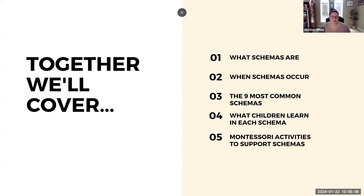During our time together today, we're going to start by talking about what schemas are and when they happen. We'll then take a look at the nine most common schemas in early childhood and some activities — specifically Montessori activities — that can be implemented to align with those schemas. Then I'll share some resources and we'll have a few minutes at the end for questions.